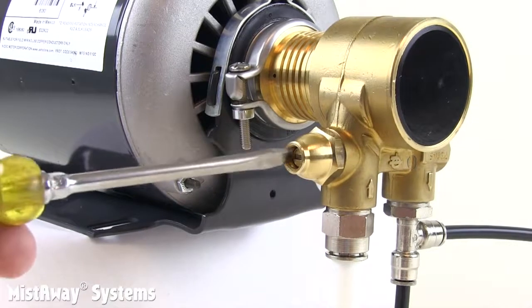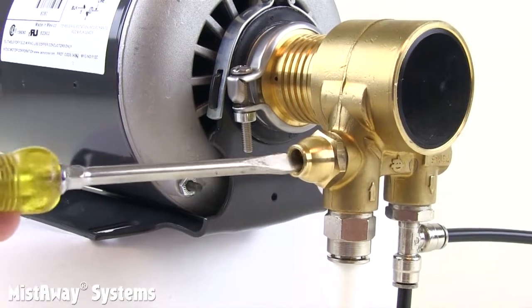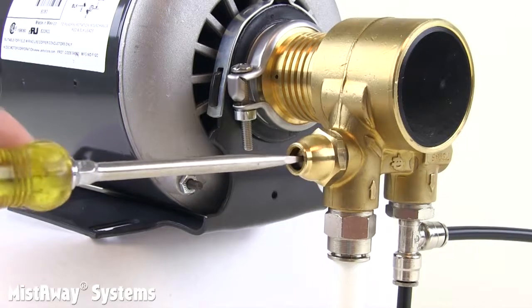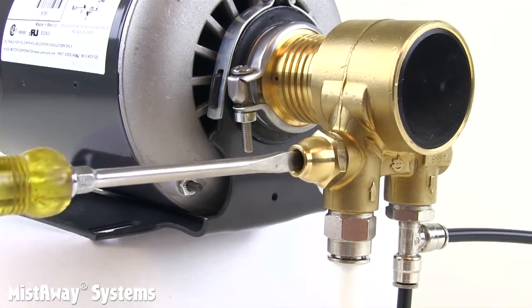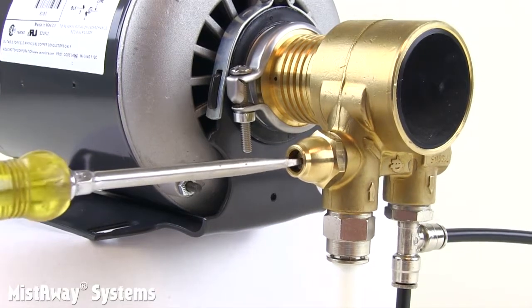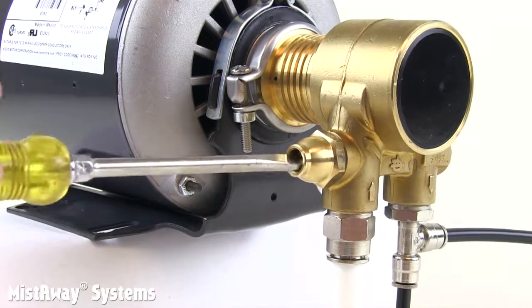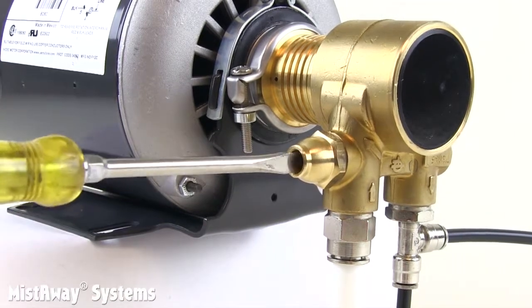On this end of the pump, you'll also see a fitting that contains the head of a screw. This screw is actually the top of a needle valve, and you can use a flat-head screwdriver to adjust the pressure the pump is producing. We'll cover when you might want to do that later in the video.